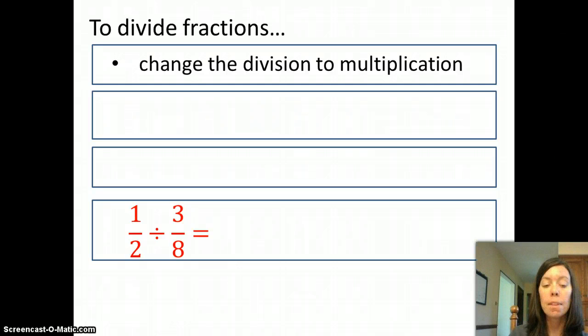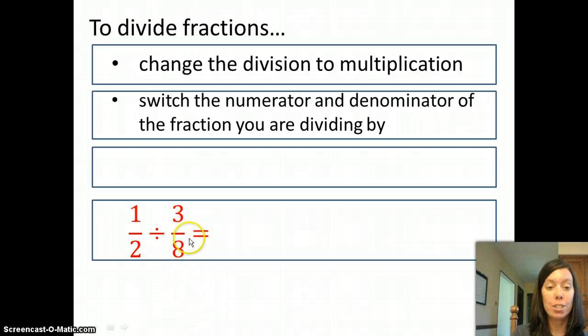After you change to multiplication, you also have to flip over the second fraction. So you switch the numerator and the denominator. If I look at my example down here, the second fraction is 3 over 8. That's the fraction I'm dividing by. I'm going to end up flipping this over, making 3 the denominator and 8 the numerator.